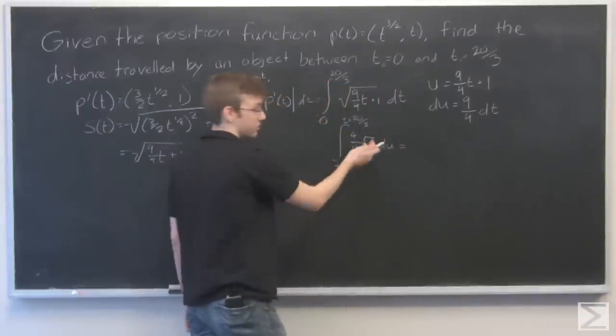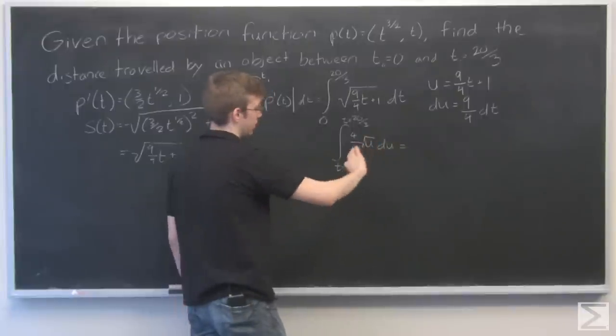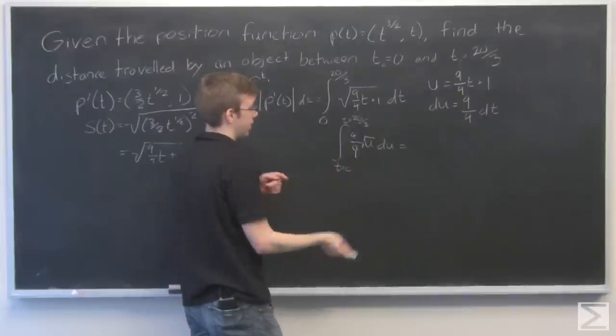And to integrate that, this is u to the 1 half, so it becomes u to the 3 halves times 2 thirds.